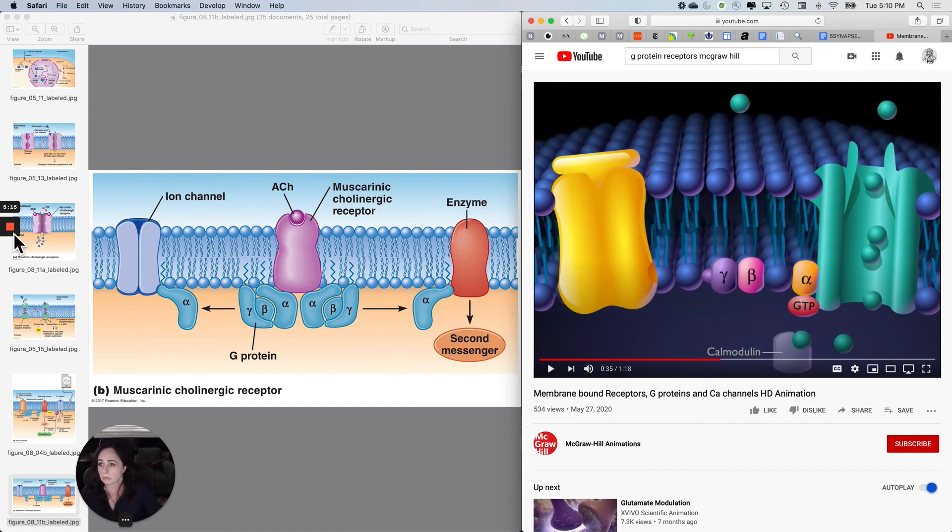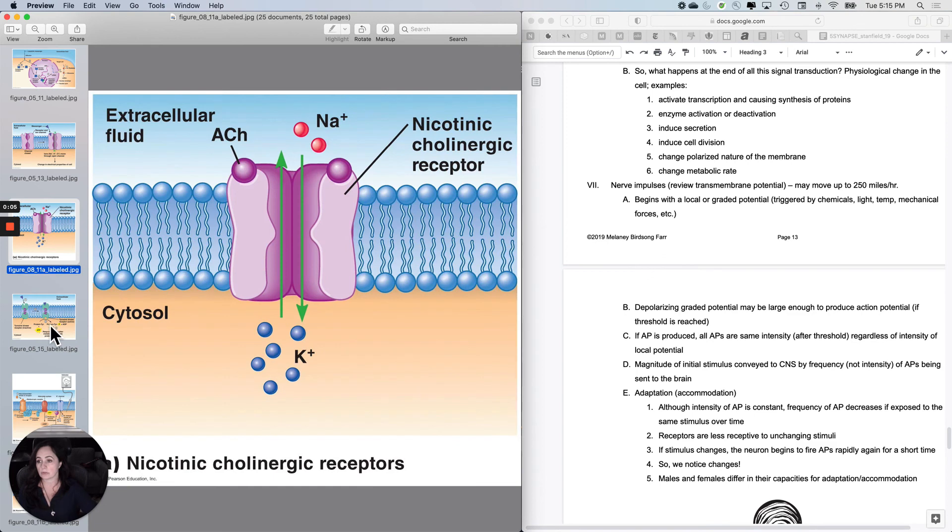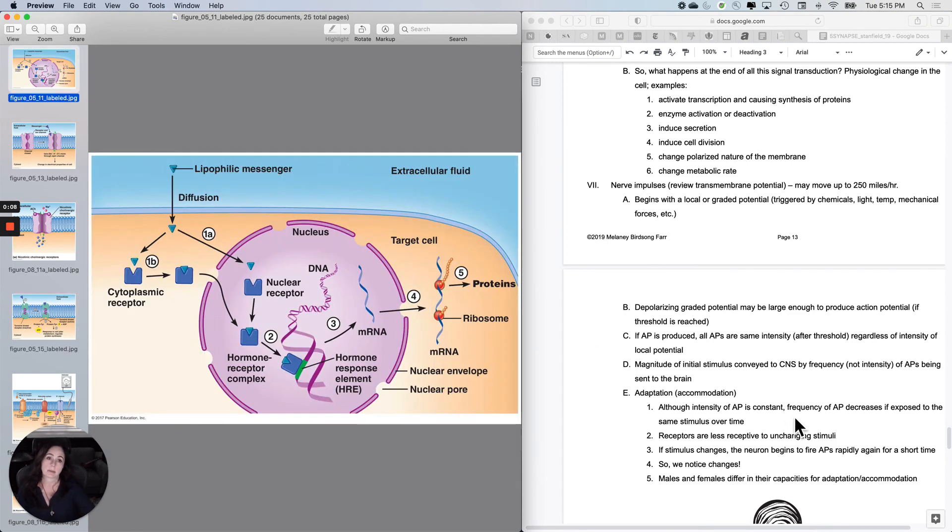Okay, so different ways to cause the postsynaptic cell to do something. But what is the something? What does the cell do after all of the signal transduction? Well, it's different for different cells and different chemical messengers, but definitely the cell has a physiological change. So it could, like here, activate transcription, causing synthesis of a protein that might be an enzyme.